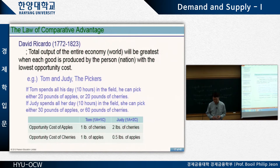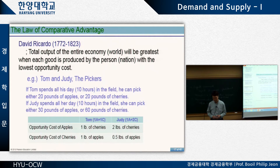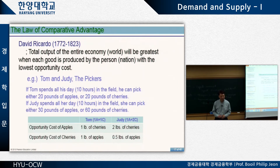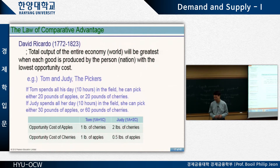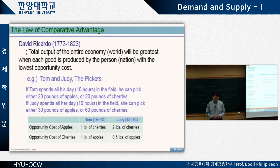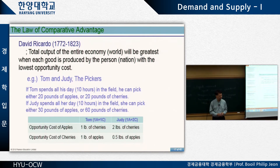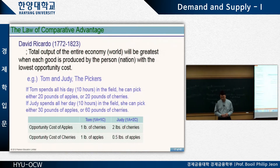Suppose there are two people, Tom and Judy, who both work on a farm or orchard. If Tom spends 10 hours, he can pick either 20 pounds of apples or 20 pounds of cherries — he is equally productive in both. Judy is more experienced: when she spends 10 hours, she can pick either 30 pounds of apples or 60 pounds of cherries. She's much better at picking cherries. So here we can think about opportunity cost.